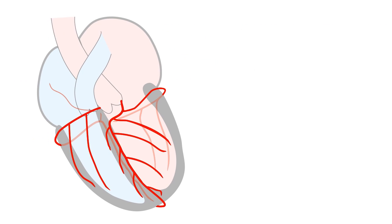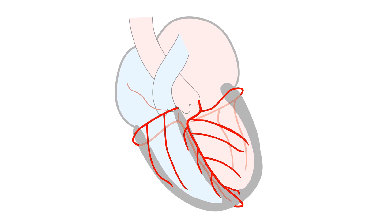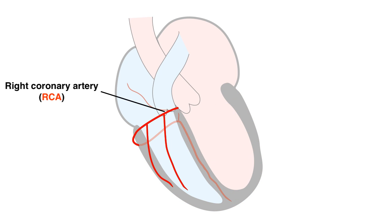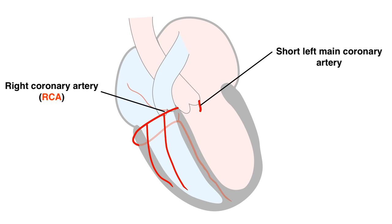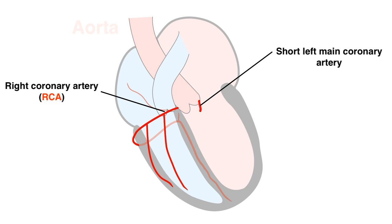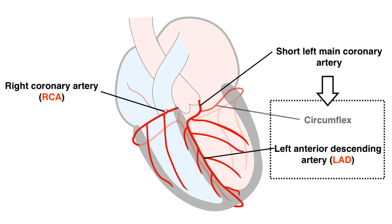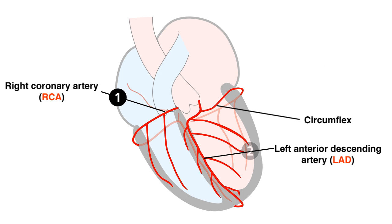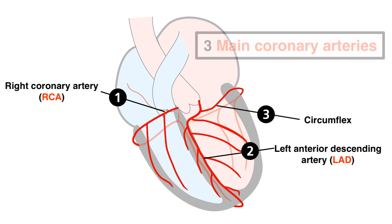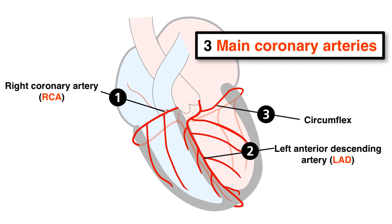Coronary arteries provide oxygen-rich blood to the entire cardiac muscle. Humans have a right coronary artery (RCA) and a short left main coronary artery, both originating from the root of the aorta. The left main coronary gives off the left anterior descending artery and the circumflex artery. Together with the RCA, the LAD and the circumflex form the three main coronary arteries.